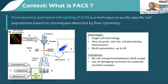Let's start with a brief context: what is FACS technology? FACS stands for Fluorescence Activated Cell Sorting, and it's a technique to purify specific cell populations — to select specific cells among a complex population based on their phenotypes. This technology relies on flow cytometry analysis. It is a single-cell technology, meaning you analyze each cell individually and obtain information about the characteristics of each cell. It's also a very accurate, multi-parameter technology, allowing discrimination of cells based on size, complexity, and several fluorescent parameters for protein secretion or specific phenotypes.